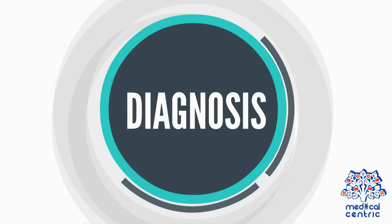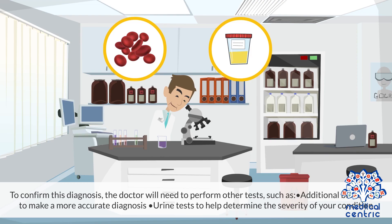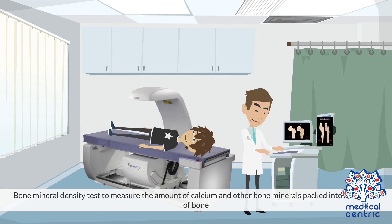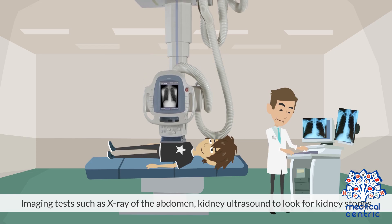Diagnosis and Treatment. If a routine blood test shows a high level of calcium in your blood, hyperparathyroidism might be suspected. To confirm this diagnosis, the doctor will need to perform other tests, such as additional blood tests to make a more accurate diagnosis, urine tests to help determine the severity of your condition, a bone mineral density test to measure the amount of calcium and other bone minerals packed into a segment of bone, and imaging tests such as an x-ray of the abdomen or kidney ultrasound to look for kidney stones.